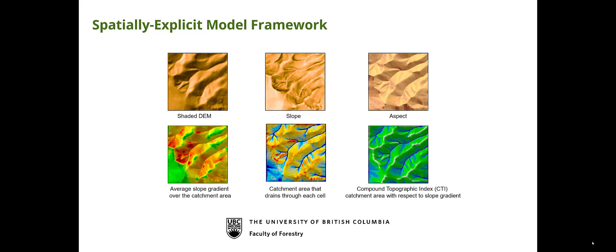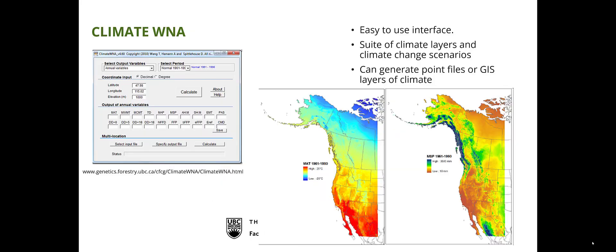Coupled with this increase in our understanding of geospatial data is our understanding of climate data. There are a large number of climate datasets we can now access that are at fine temporal and spatial resolution. In this project, we used a climate model called Climate WNA, which is based on the PRISM framework out of Oregon State University. This allows us to input a DEM, the position of where we are on earth through that DEM and the elevation, and then generate both past and future climate at a daily time scale.